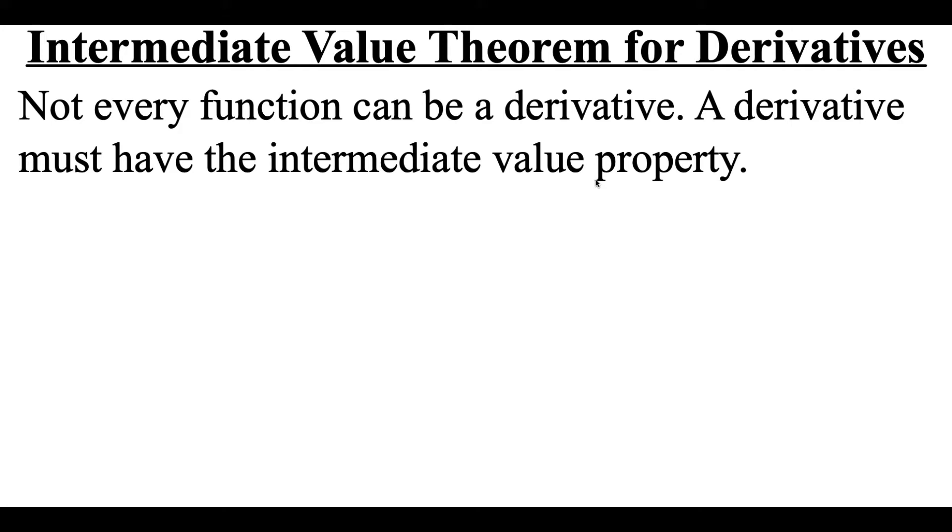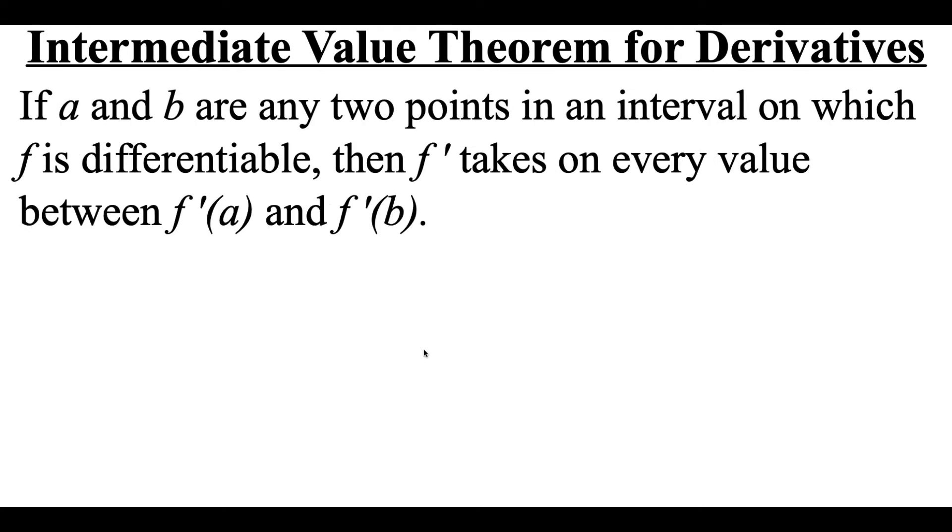Not every function can be a derivative. A derivative must have the intermediate value property. The intermediate value theorem for derivatives says that if a and b are any two points in an interval on which f is differentiable, then the derivative of f takes on every value between the derivative of f at a and the derivative of f at b.